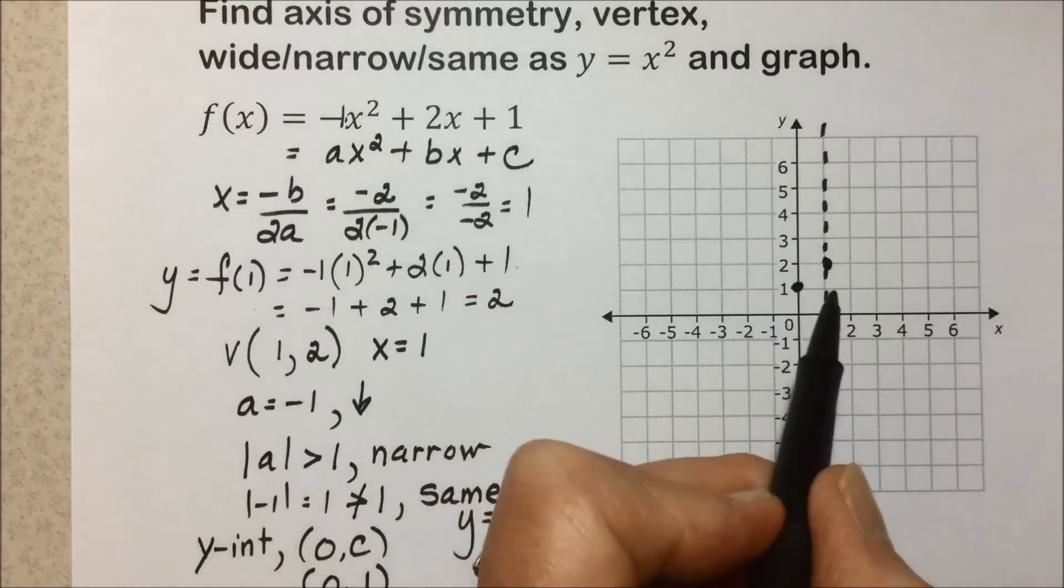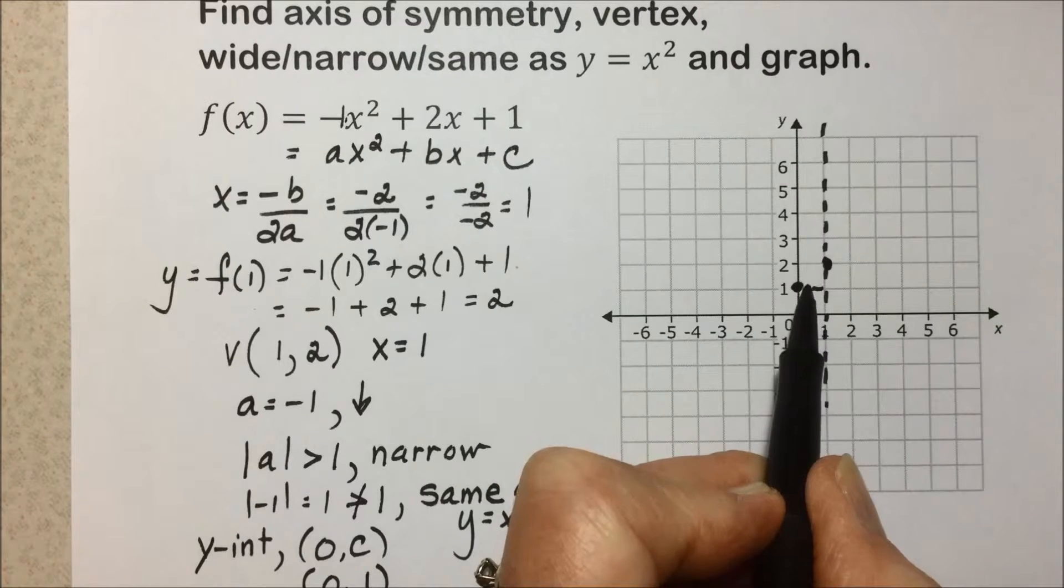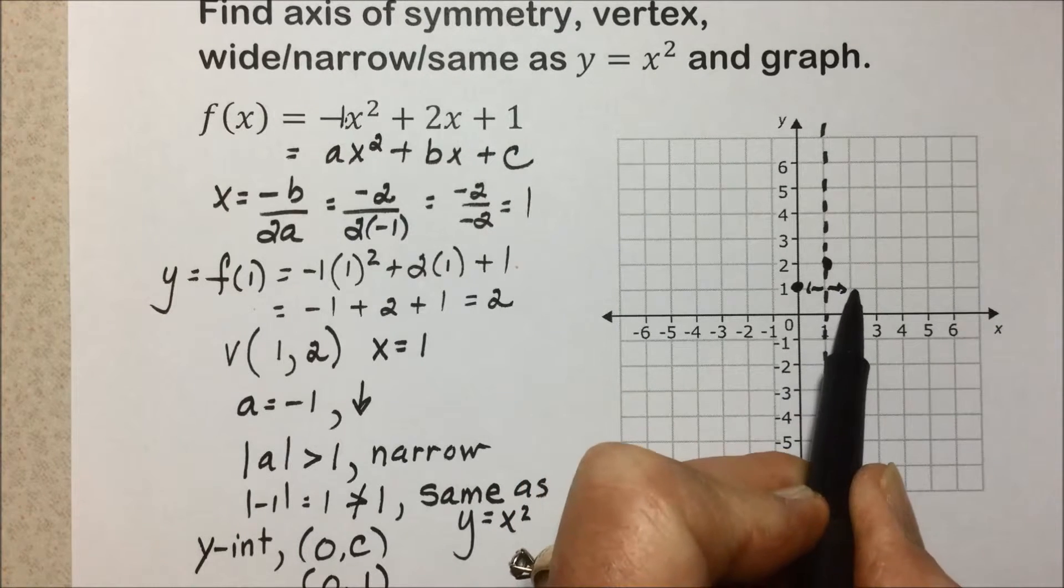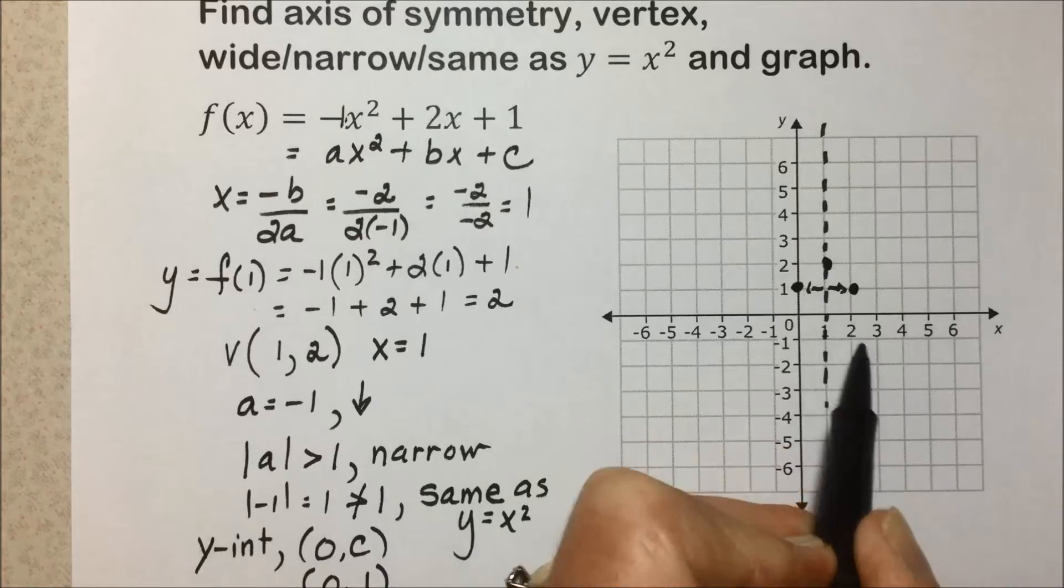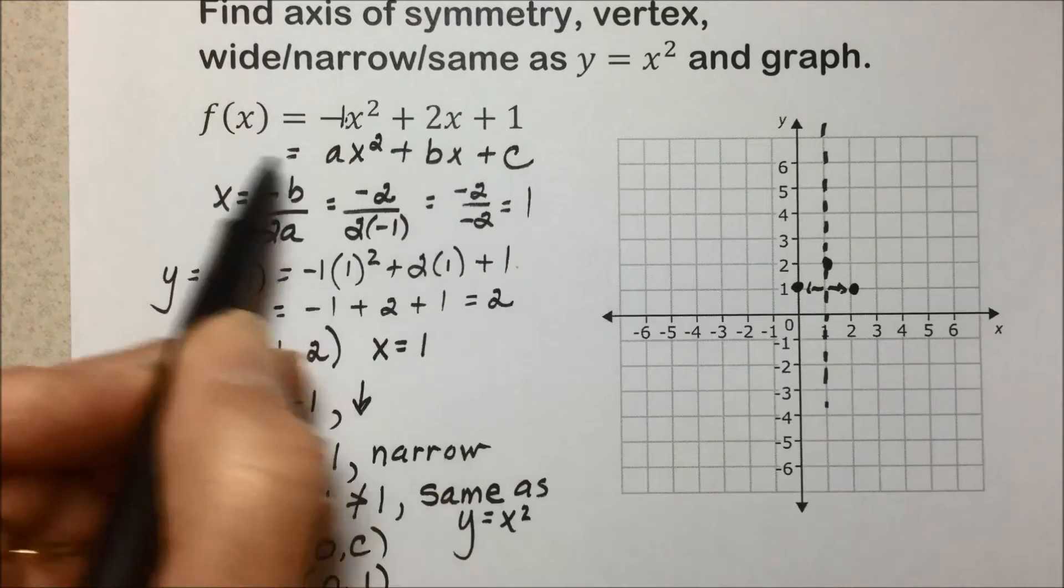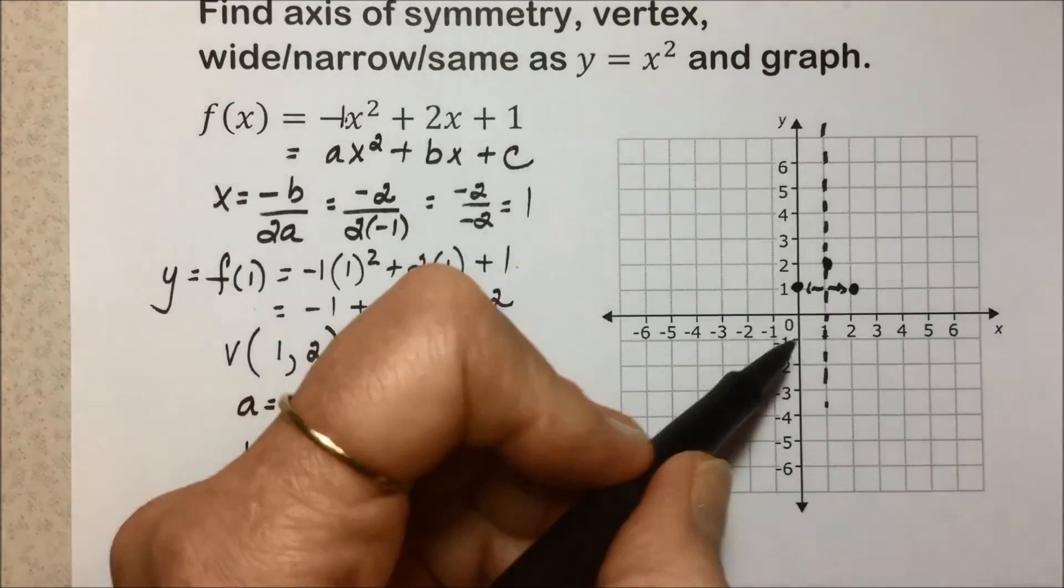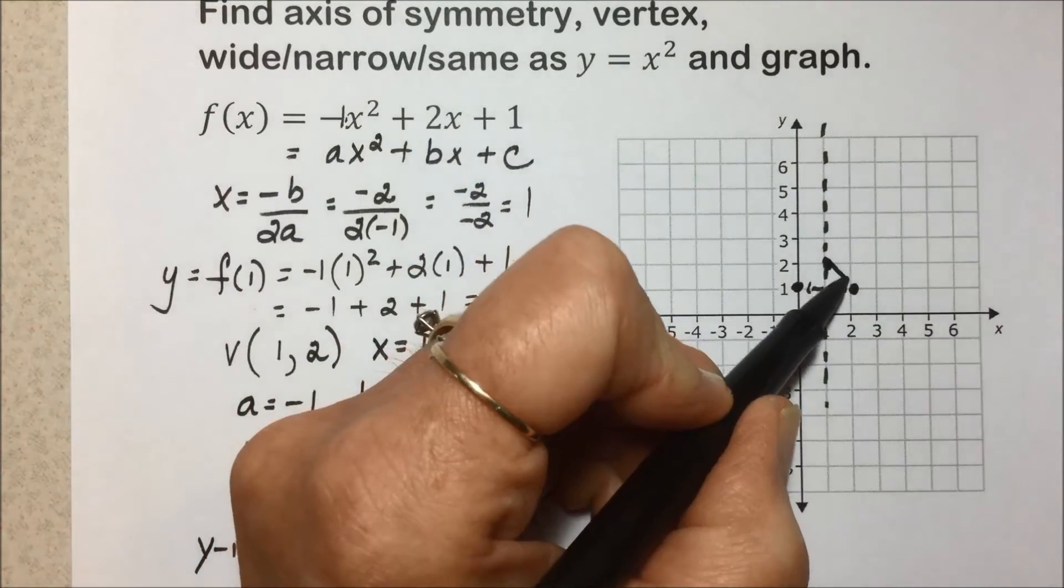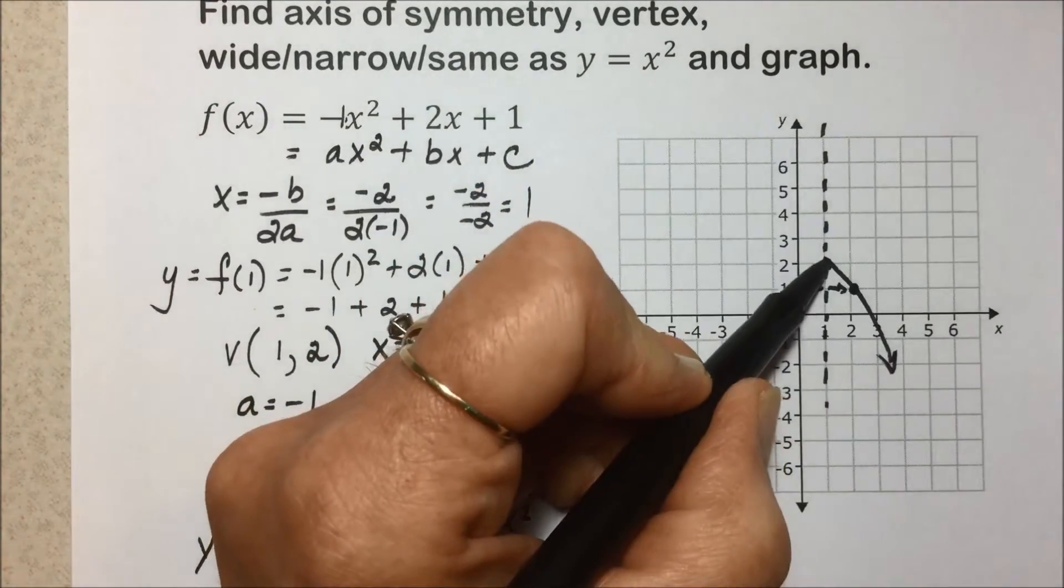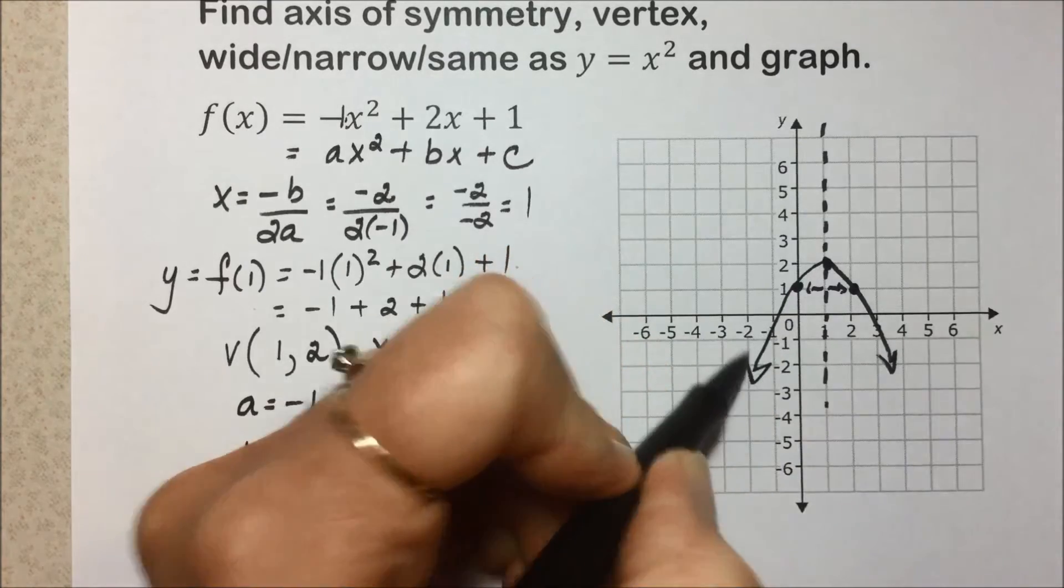We also know that we have a y-intercept of (0, 1). Because we are 1 away from our axis of symmetry, we can, through reflexive, find another point, and we could verify that if we let x equal 2 plug it in, we should find that it has a value of 1.